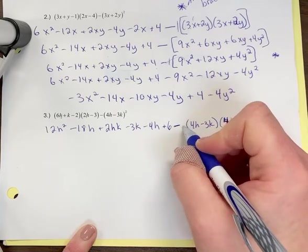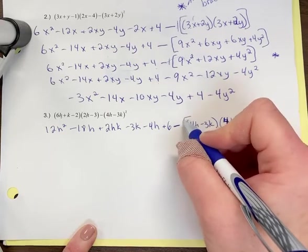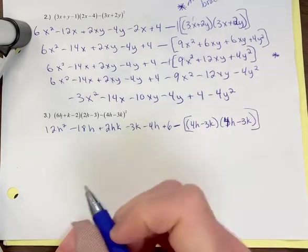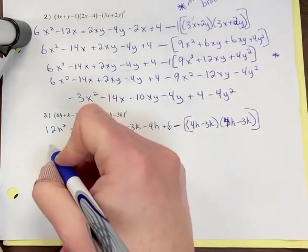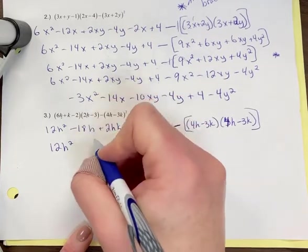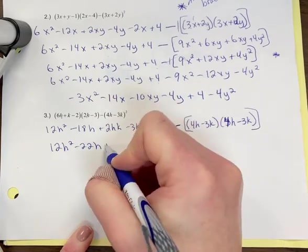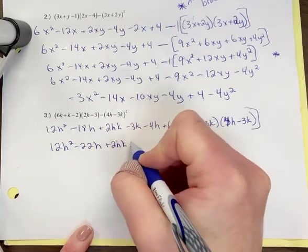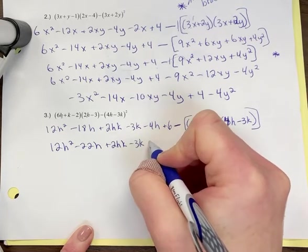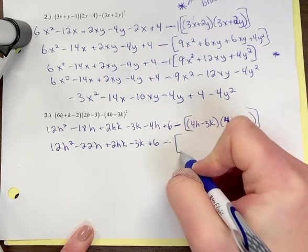Even if this was a negative two, even if this was a positive number other than one, you would have to do this. So you put your brackets around there. It's always safe to do that. Let's combine any like terms here. 12h squared. The minus 18 and the minus four is going to become minus 22h plus 2hk. There's no other negative 3k and plus 6. Minus sign still there. We're going to foil this out.